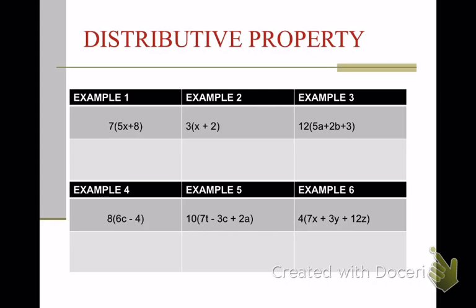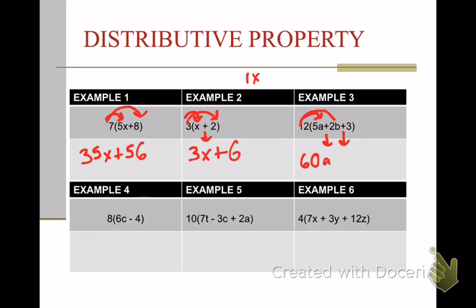All 6 of these need to be in your notes. First one, 7 times 5x plus 7 times 8. So, that one's going to be 35x plus 56. Next one is going to be 3 times x. Well, 3 times x, it's the same thing as 1x, because we have 1x. So, what's 3 times 1? Well, that's 3x plus 6. Remember, we need to do both of those. Once again, plus sign just dropped down. This one, we've got the plus sign. We've got the plus sign. Here we go. 12 times 5a. Well, that one gives us 60a. Plus we have 12 times 2b, which is 24b. Plus we have 12 times 3. And 12 times 3 gives us 36. So, our answer is 60a plus 24b plus 36.